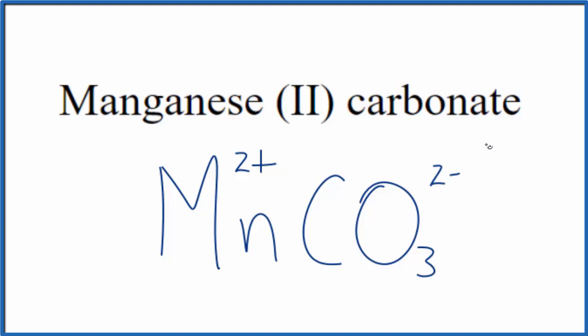So 2 plus and 2 minus, that adds up to zero. So the formula for manganese (II) carbonate is MnCO3.